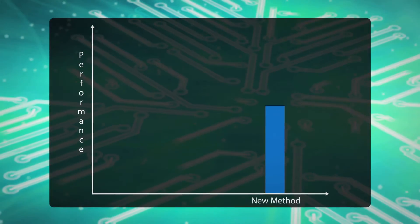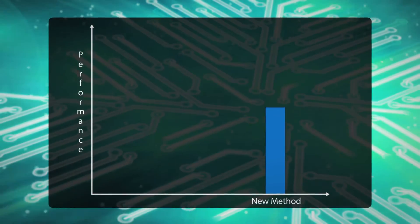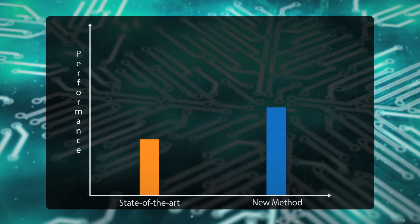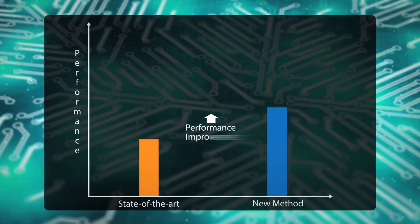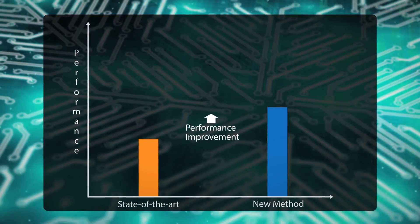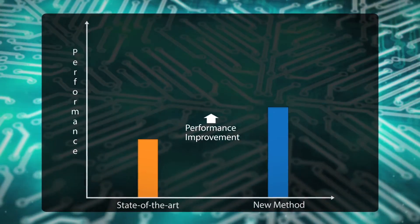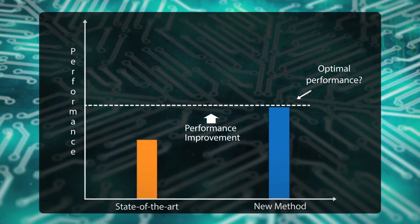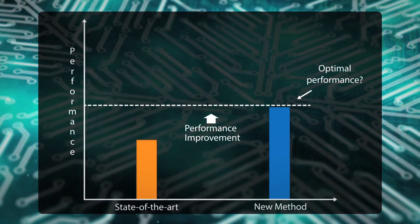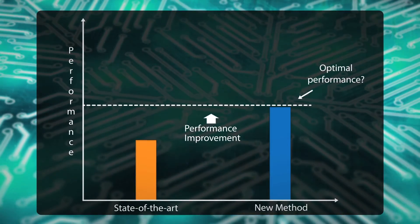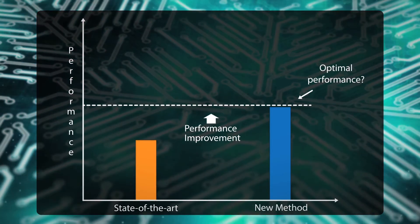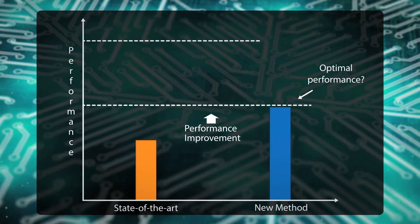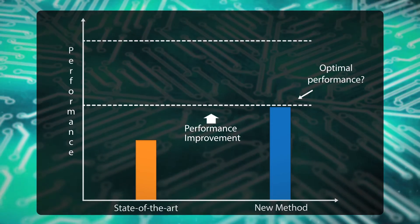When a new such algorithm is proposed, it is compared against existing methods. Since these problems are intractable, it is impossible to know the performance of the optimal solution. If the output from the algorithm is already close to optimal, then the problem is solved. But if not, more effort should be invested to improve the algorithm.